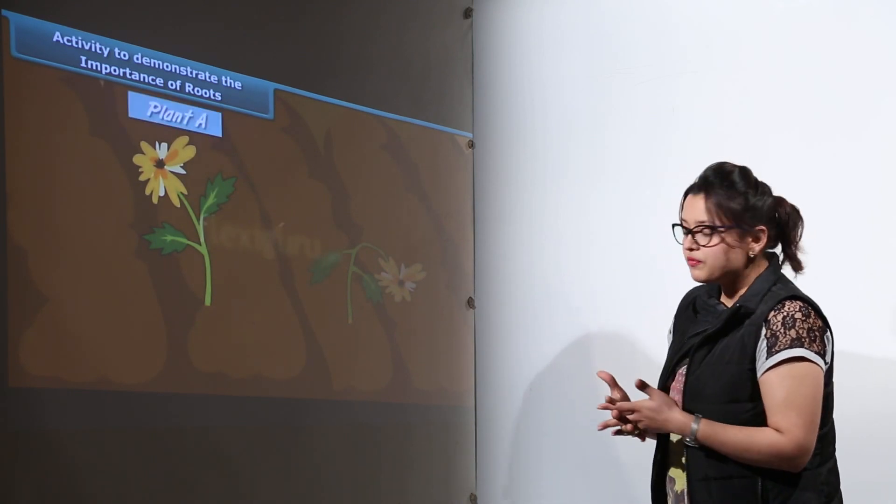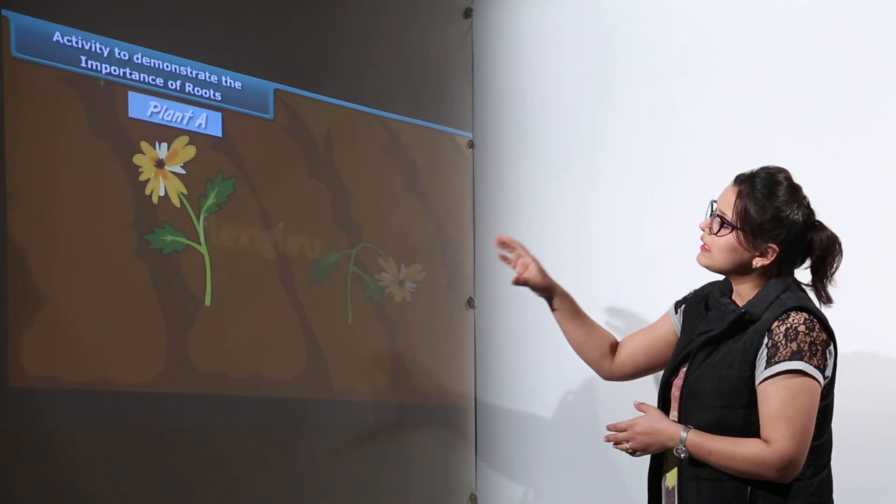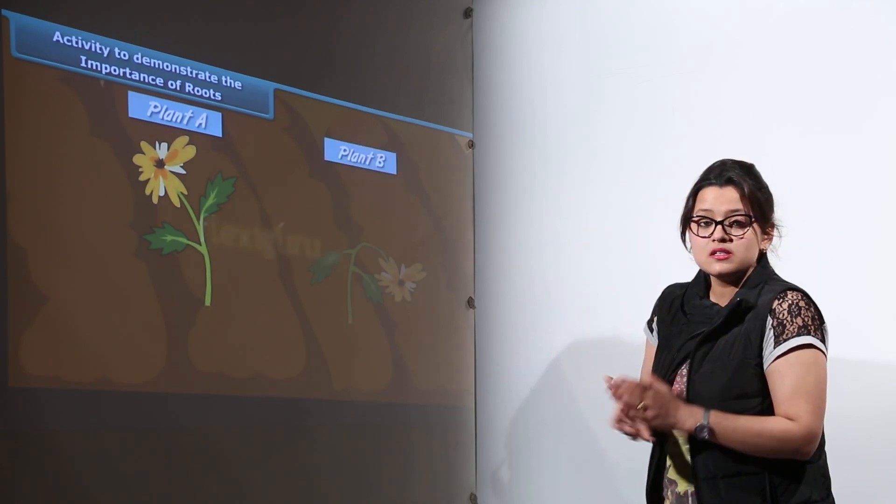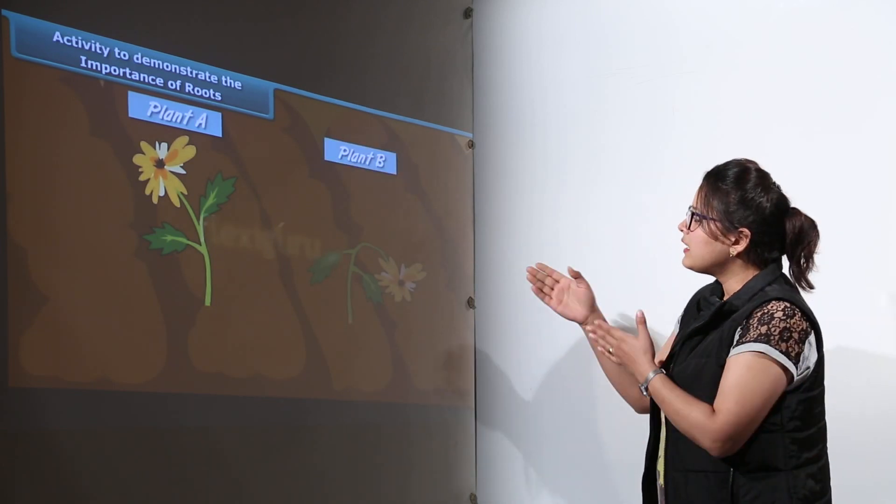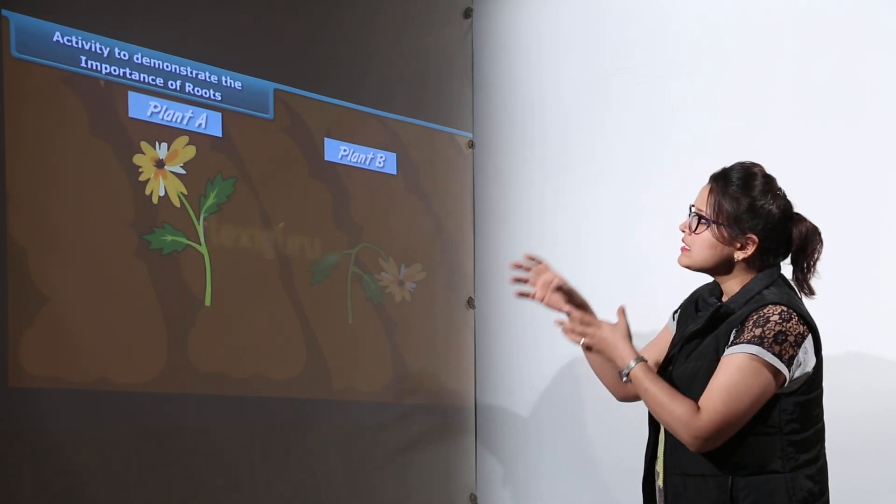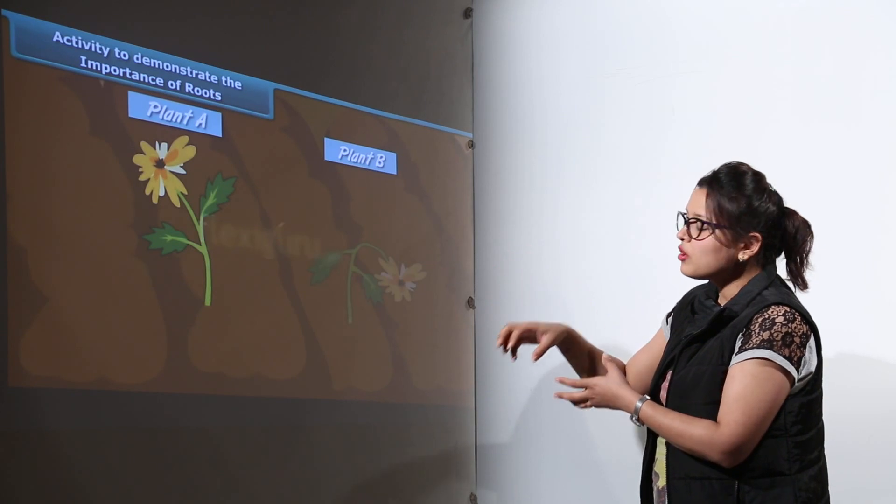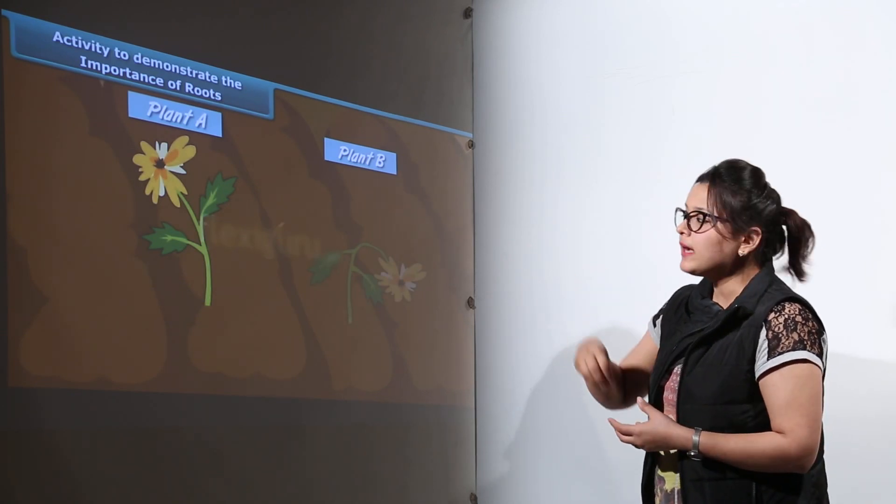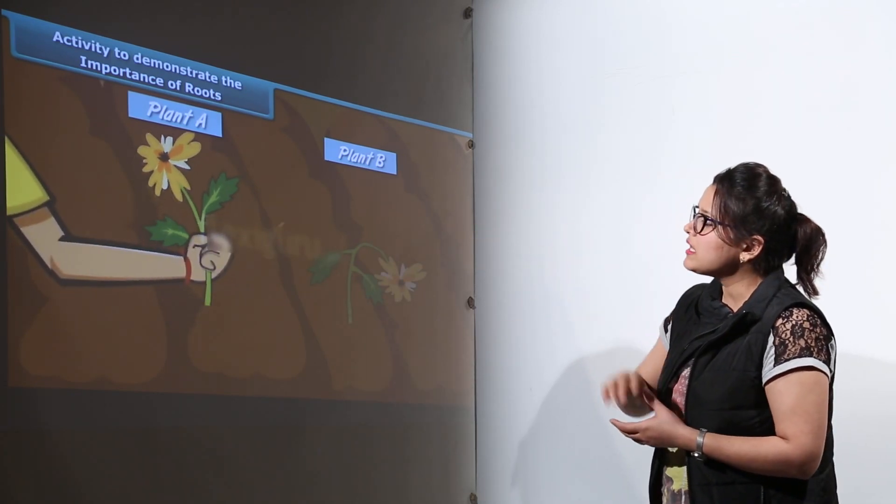After a few days you would observe that plant A is as healthy as earlier, but plant B is wilted. We can see that it is the roots that absorb water from the soil and transfer it. That is why plant A is very healthy.